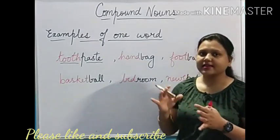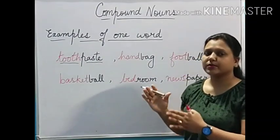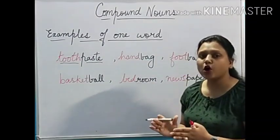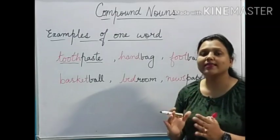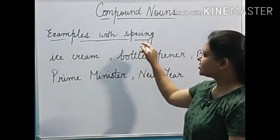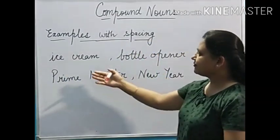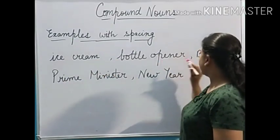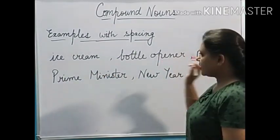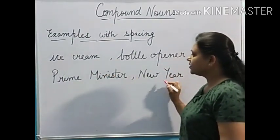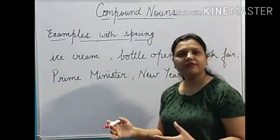Now look at the examples of some compound nouns which are formed with spacing. We have ice cream, bottle opener, book fair, prime minister, and new year.